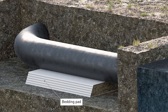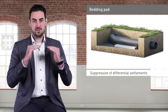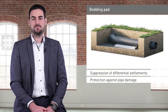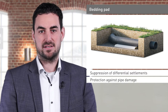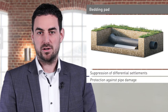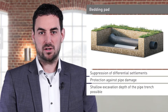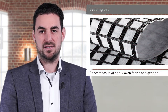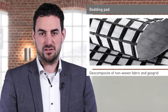Depending on the soil conditions, a special bedding of the pipe may be required, especially to prevent differential settlements and to protect the pipe against damage. Considering the local requirements, this bedding can be carried out by means of a geotextile bedding cushion. The advantages of this are the generally shallower excavation depth of the pipe trench and the possibility of installation even in very soft soils. A bedding pad would preferably be made of a composite consisting of a geogrid and a non-woven fabric.